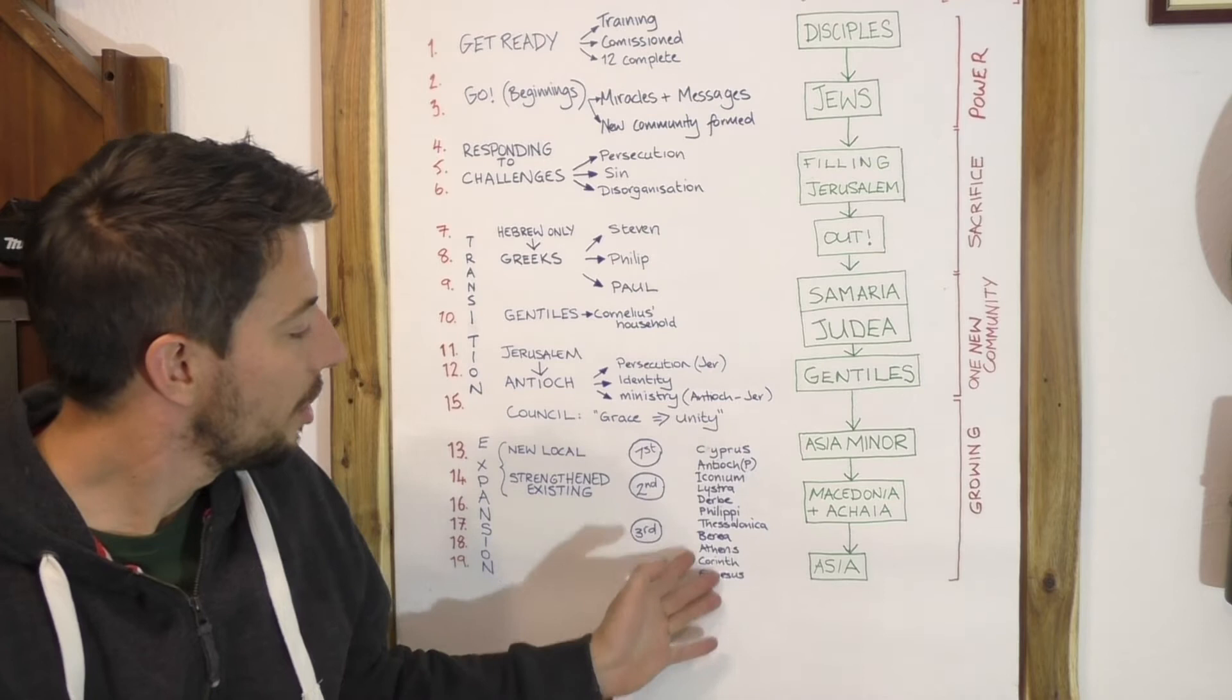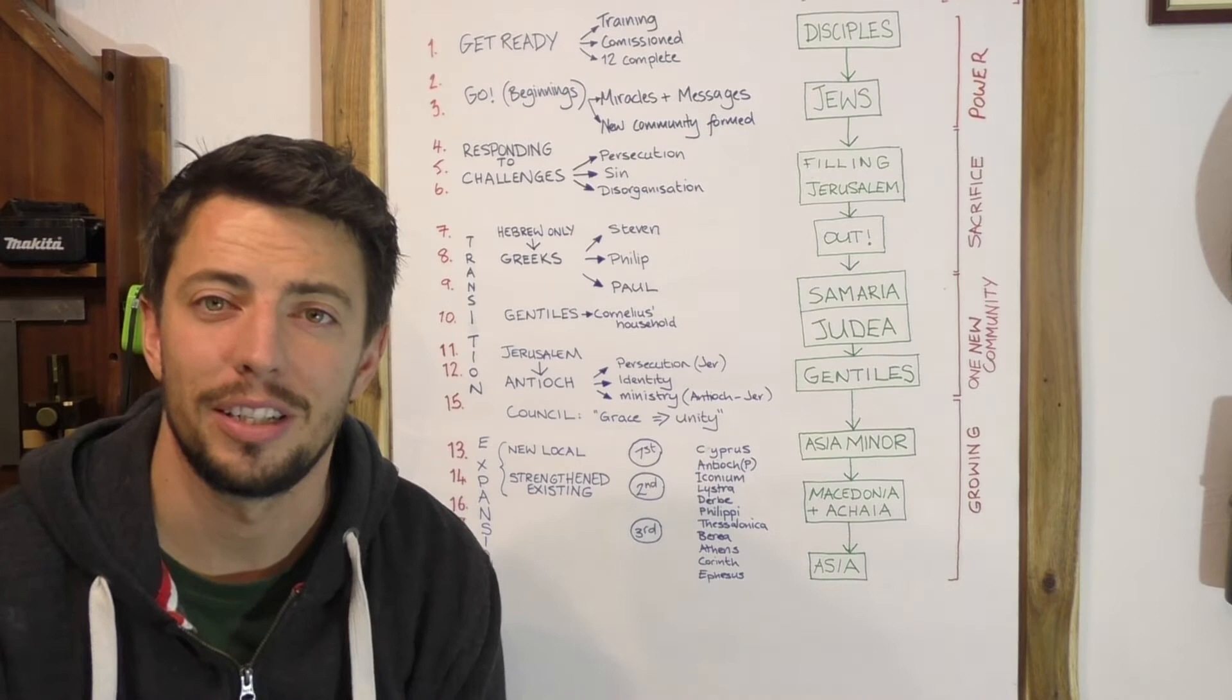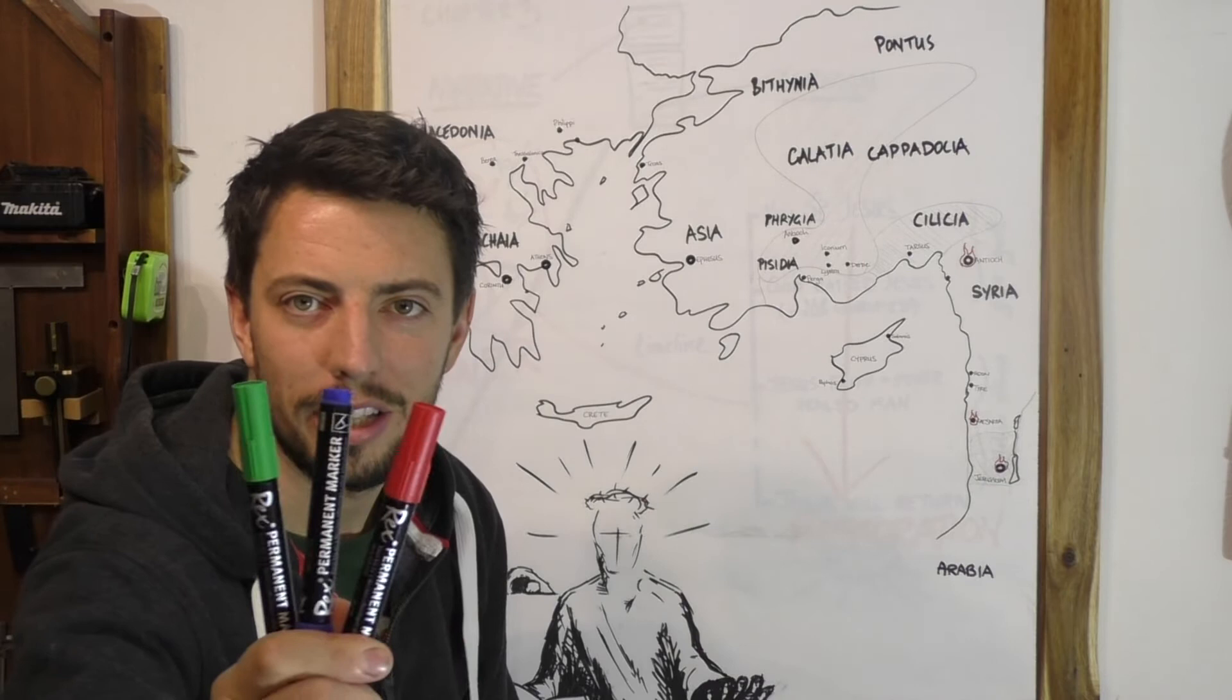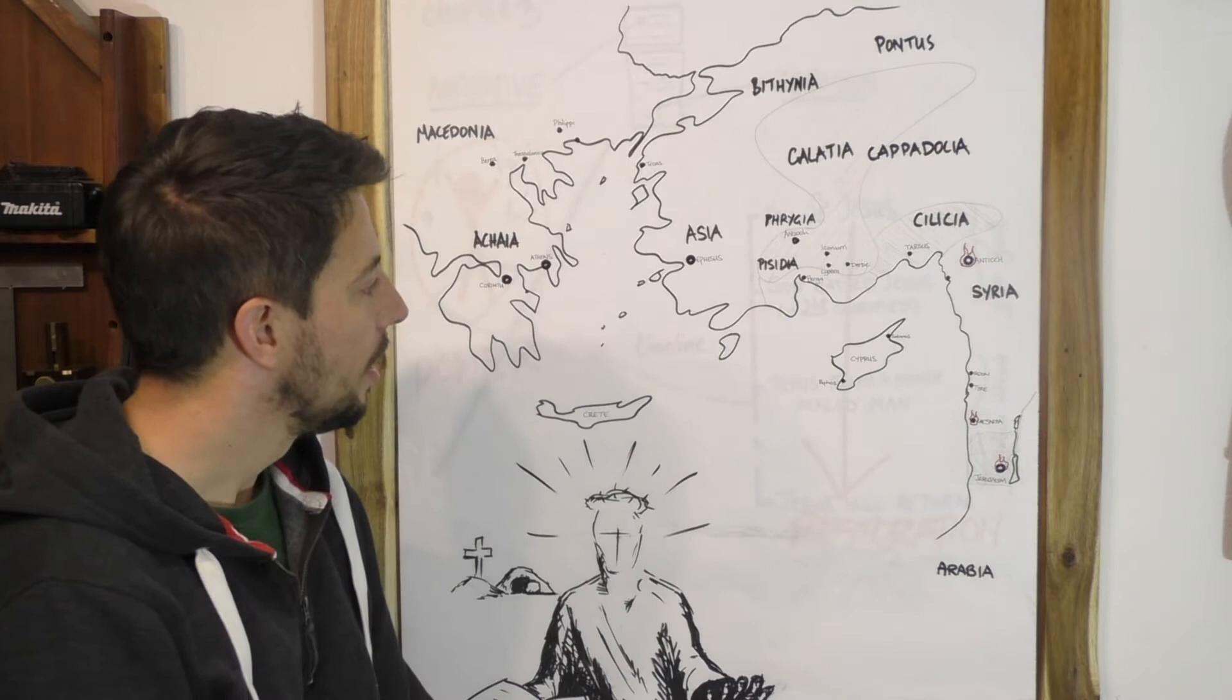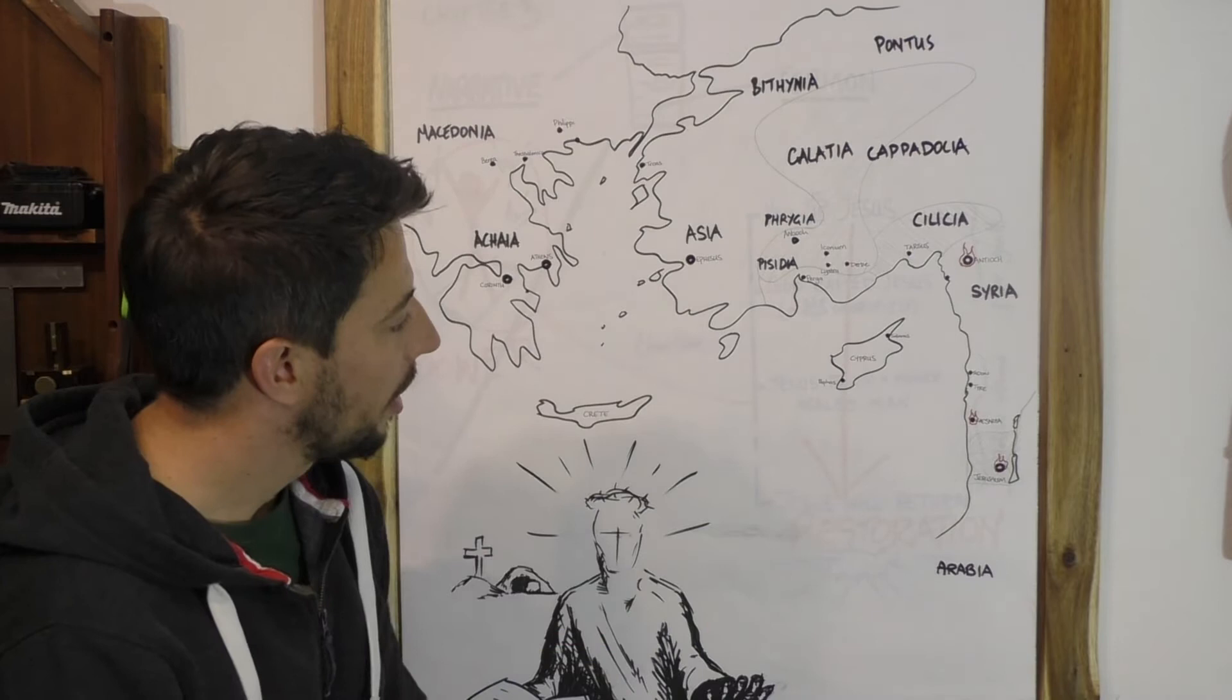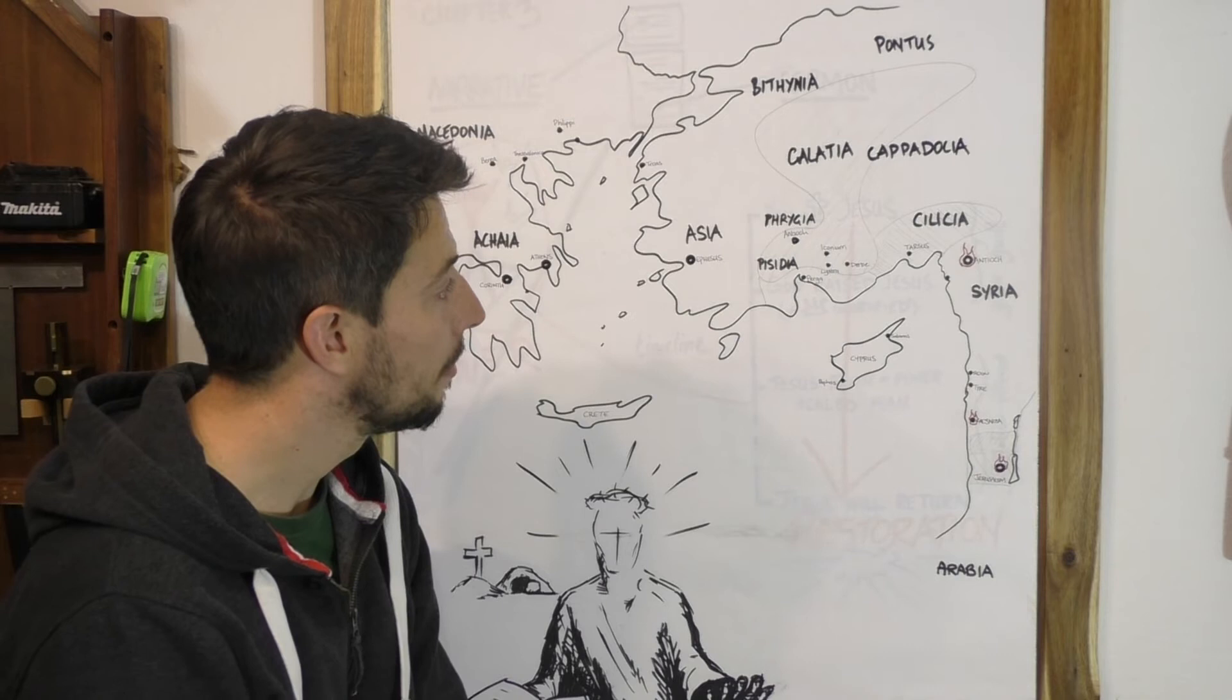We will mention a lot of cities that you may or may not know where they are. Certainly these Roman districts, Asia for example, is not what you and I are thinking Asia is. I think it'll be good to see these things on the map and plot out the journeys. I'm going to try and sketch out, trace out these three journeys on our map. This is the map of the eastern side of the Mediterranean. Here you have Jerusalem and Israel, modern-day Turkey, modern-day Greece.